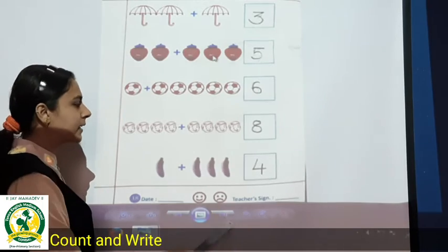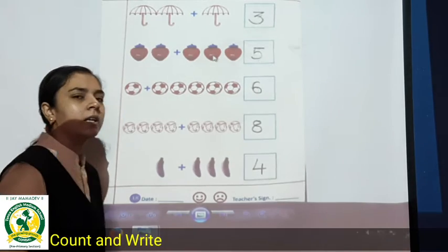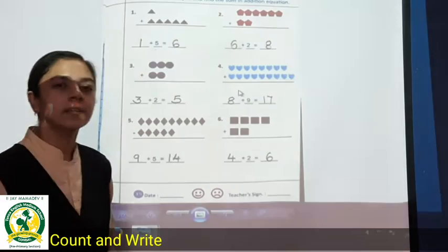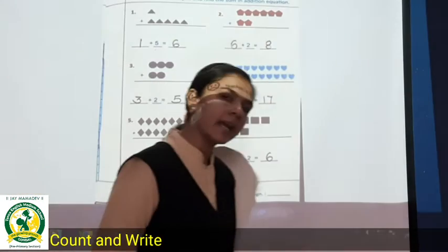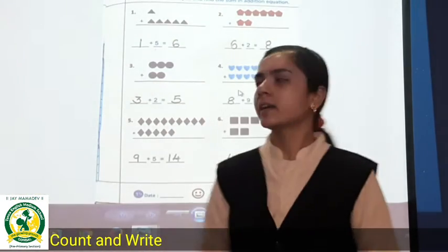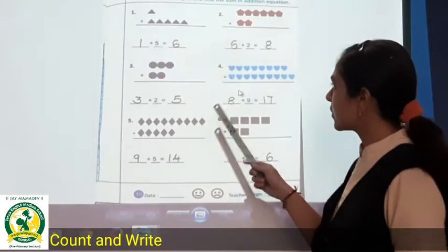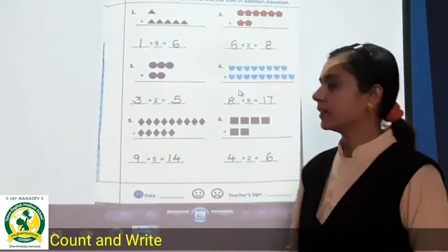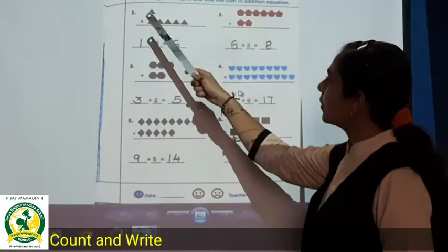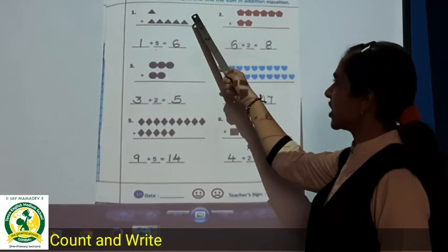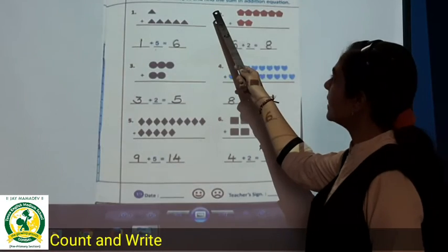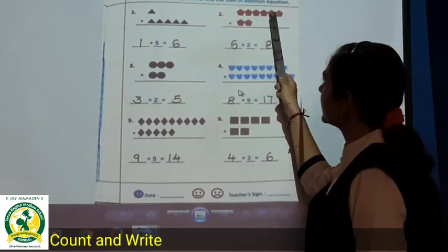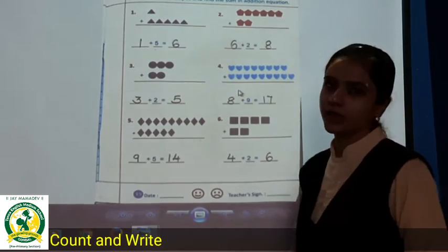So you will count this page. Now next page, number 39. See here also we have to do addition. Count the given shapes and find the sum in the addition.